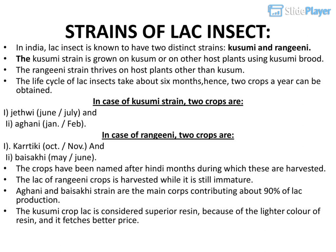In the case of rangini, two crops are: 1. Kartiki (October–November), and 2. Bisaki (May–June). The crops have been named after Hindi months during which they are harvested. The rangini crops are harvested while still immature. Agani and Bisaki strains are the main crops, contributing about 90% of lac production. The kusumi crop lac is considered superior resin because of the lighter color of its resin, and it fetches a better price.